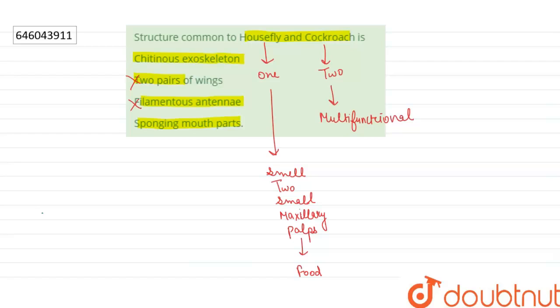If we talk about option four, sponging mouth parts: in housefly, the mouth part is a soft spongy structure which is called labella.